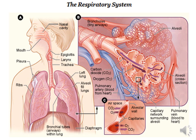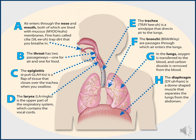This slide represents the respiratory system. Please be familiar with all the parts. Air enters the body through the nose and mouth and goes into the throat, which has two passageways — one for air and one for food. In the throat is the epiglottis, which covers the trachea when you swallow, preventing food from entering the lungs. The larynx is the upper part of the respiratory system that contains the vocal cords.